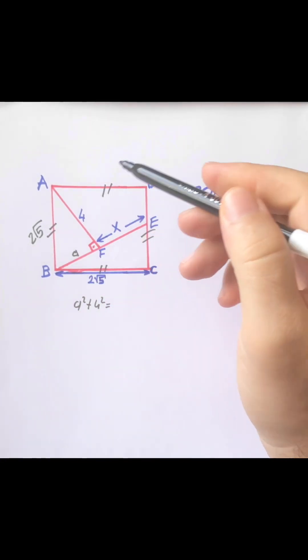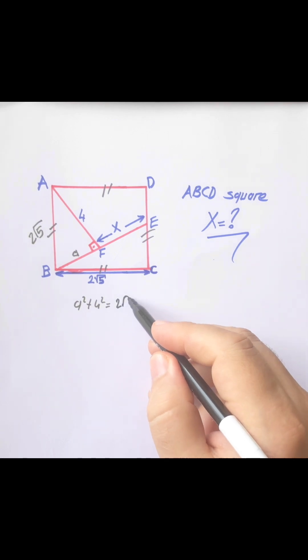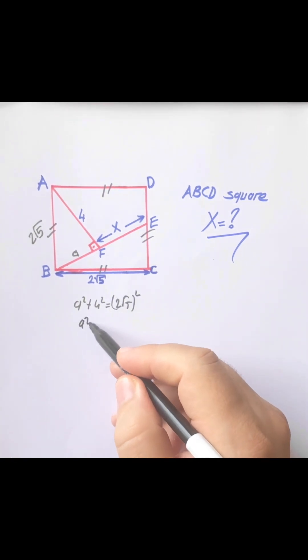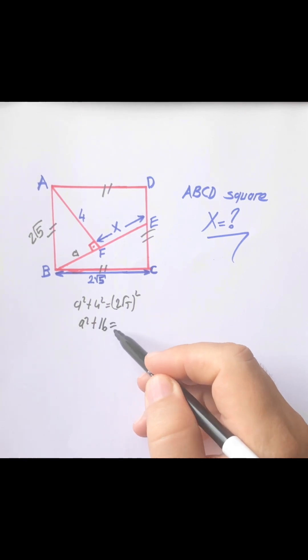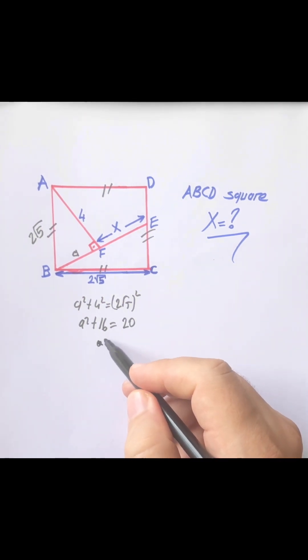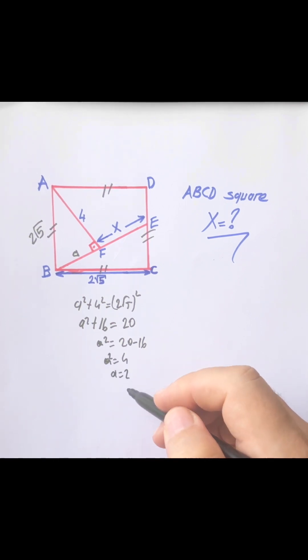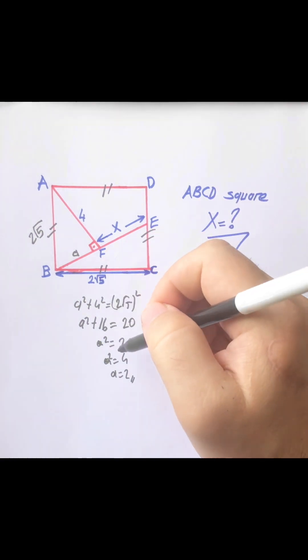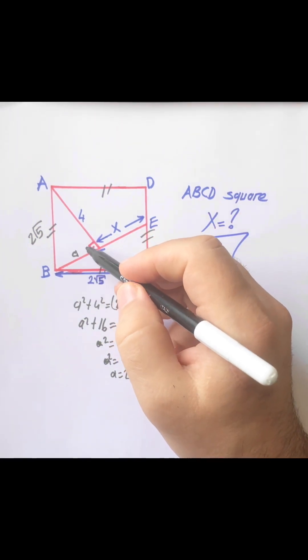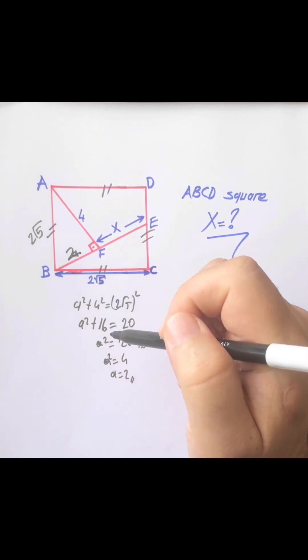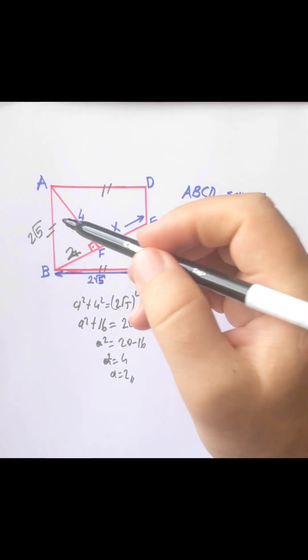Solving for a: a² = 20 - 16, so a² = 4, which means a = 2 units. So we find BF is 2 units.